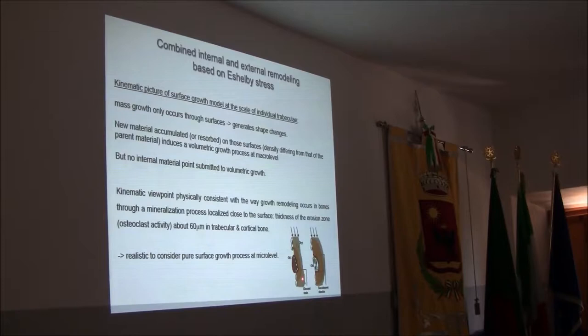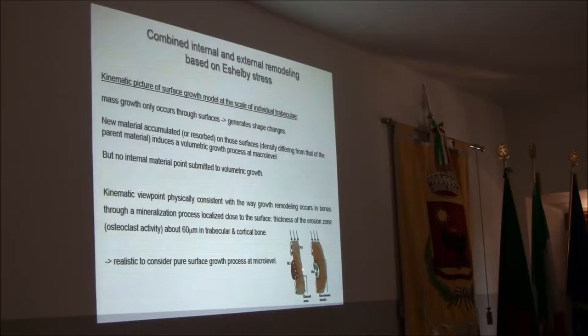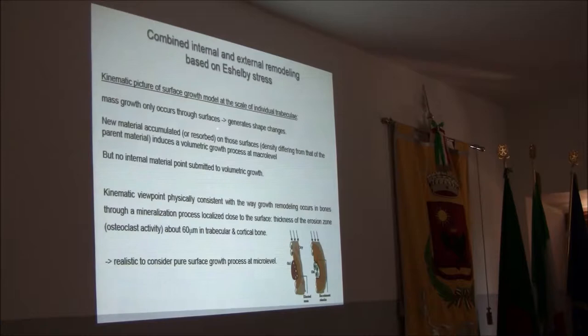Here you see a more biological view in which this seal zone — where specialized cells remove bone, the red cells osteoclasts — is followed by the other cells, the osteoblasts, which deposit new bone. This seal zone has a very small thickness, about 60 microns in trabecular and cortical bone. Mass growth at this scale only occurs through surfaces, and this generates shape change.